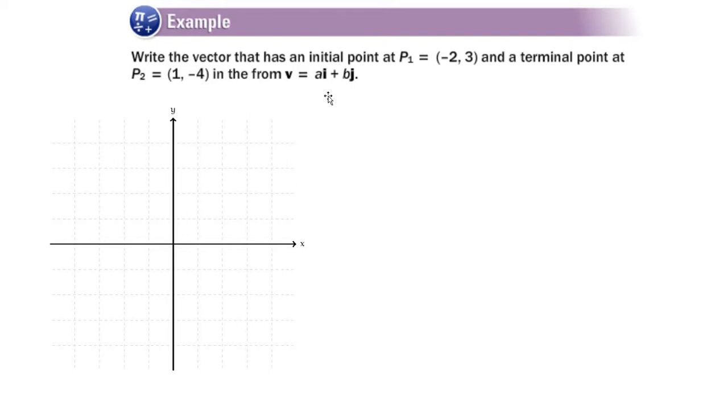Alright, we're working with vectors today, and we want to look at this first example. Write the vector that has an initial point at (-2, 3) and a terminal point at (1, -4) in this form.